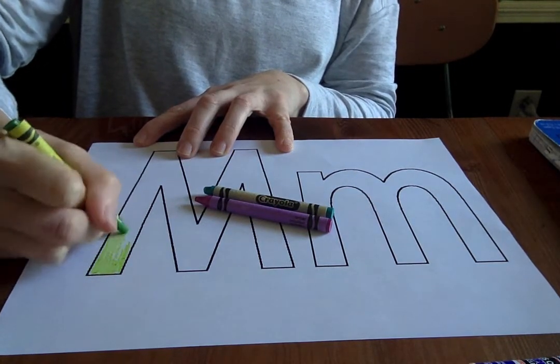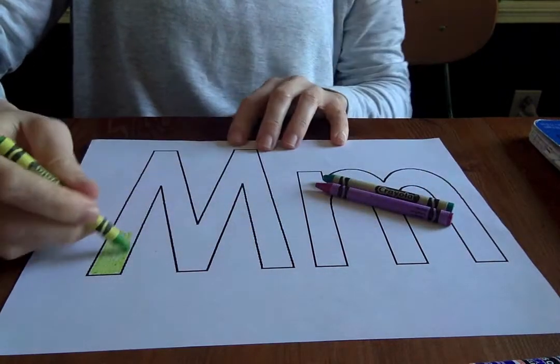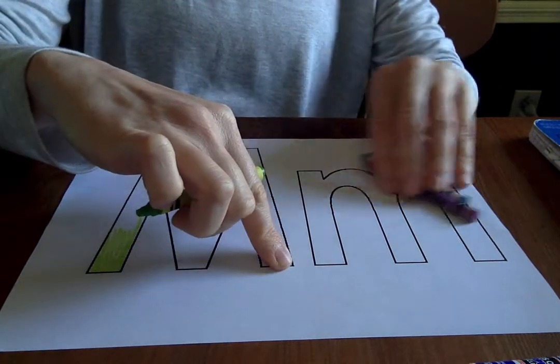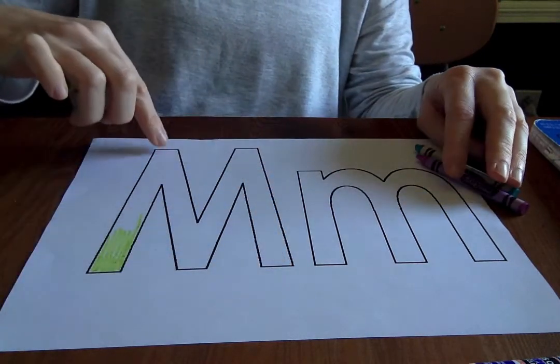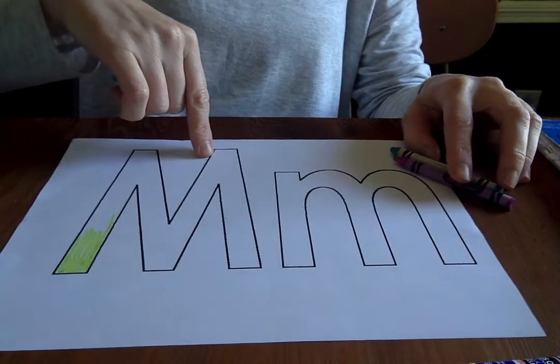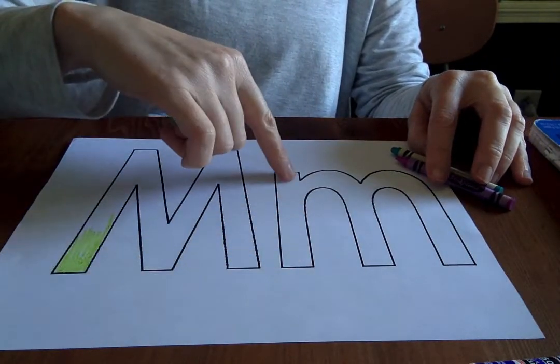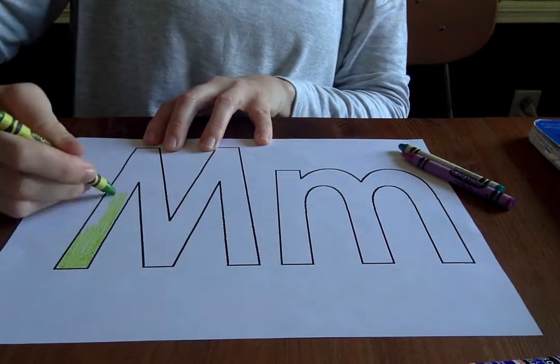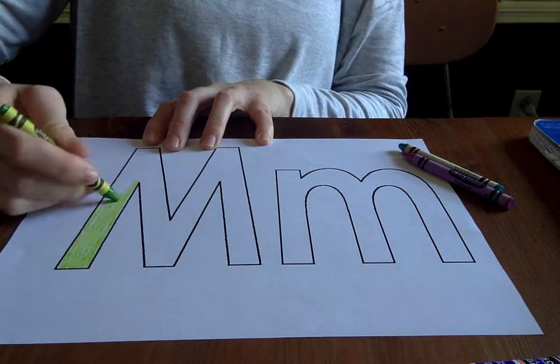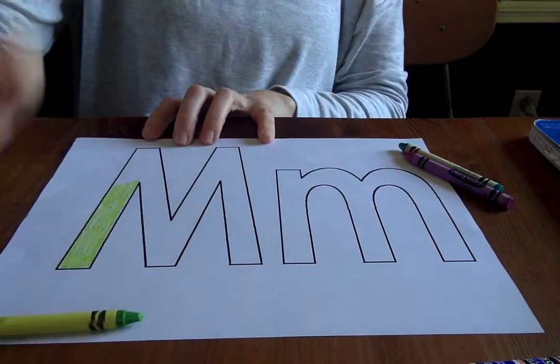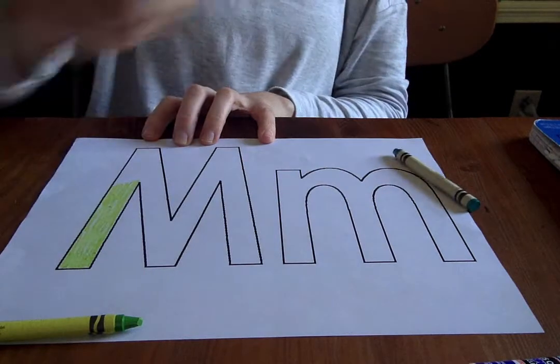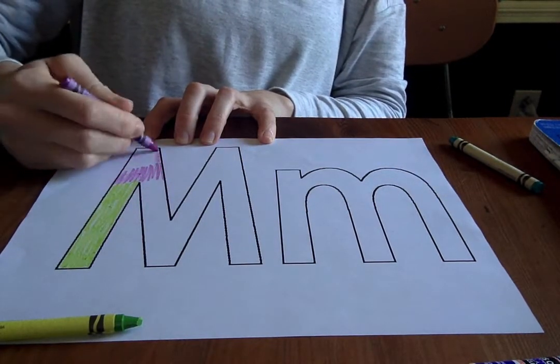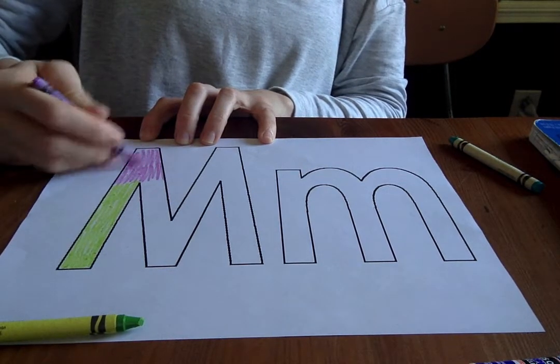Mmm. This first one is capital M. See how capital M is pointy. But lowercase M, it's got some hoops. Hoop. Hoop. Just like that. Okay, I'm going to color capital M. I'm going to color just until there. And then I'll do purple on the top. Like that. There we go.